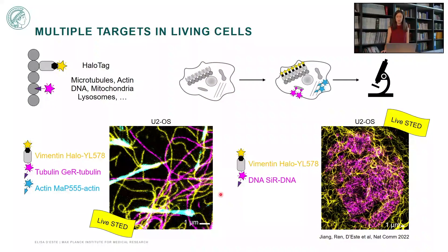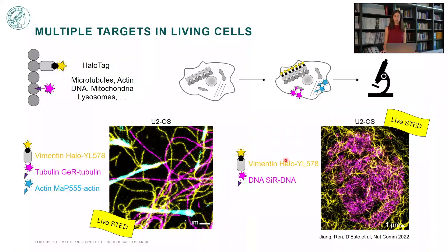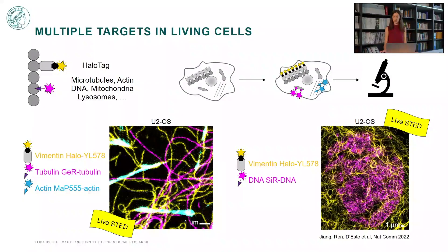Here are some examples from a recent publication in which we labeled, in the same cells, vimentin expressed in fusion with a HaloTag, and tubulin and actin labeled with small probes targeting tubulin and actin. Here is another example with vimentin labeled together with DNA, just to show that we can also make live imaging and see the dynamics of these structures.